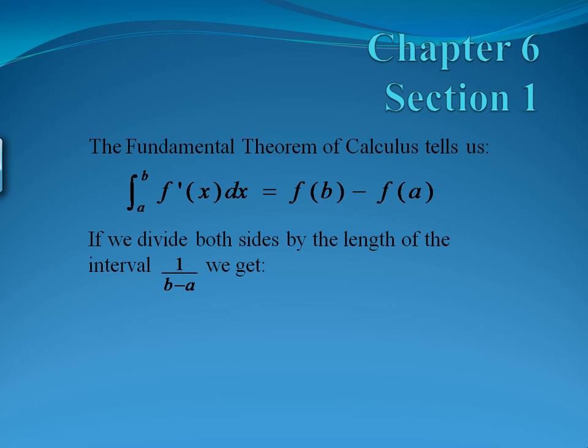If we divide both sides by the length of the interval, which would be 1 over b minus a, we get 1 over b minus a times the integral from a to b of f prime of x dx equals f of b minus f of a over b minus a.